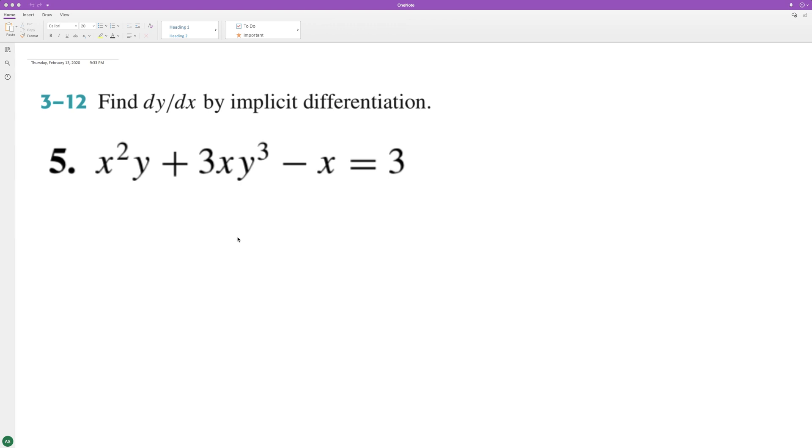For this implicit differentiation problem, anytime there's X and Y together we'll use the product rule. Starting off with our first component, take the derivative with respect to X. We have 2xy.